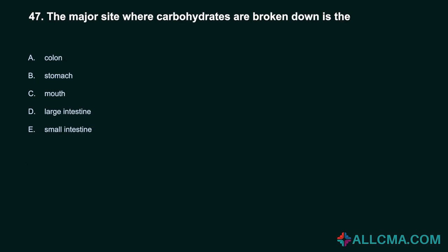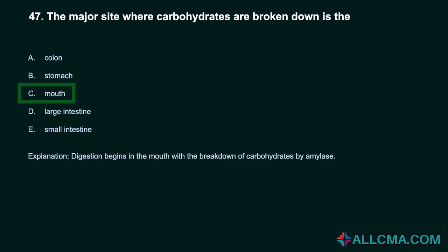Question 47: The major site where carbohydrates are broken down is the: a) colon, b) stomach, c) mouth, d) large intestine, e) small intestine. Correct answer: C, mouth. Digestion begins in the mouth with the breakdown of carbohydrates by amylase.